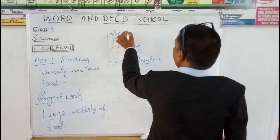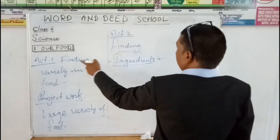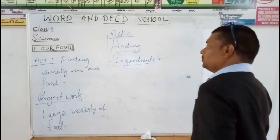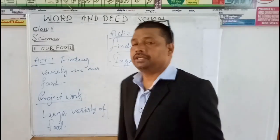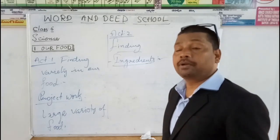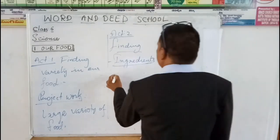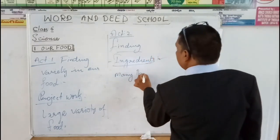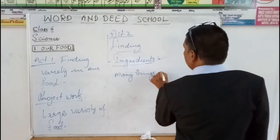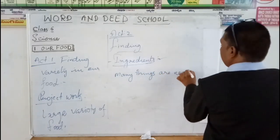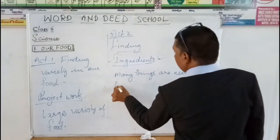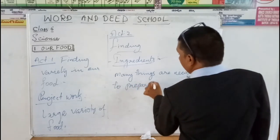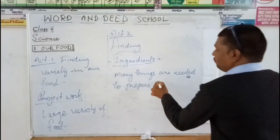This is Activity 2. Activity 1 is completed. In Activity 2, you have to find the ingredients. Many things are needed to prepare food.